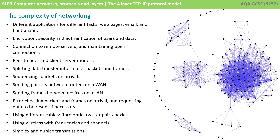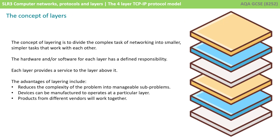We might be using different types of cable like fibre, twisted pair, and coaxial, or we might be using wireless with frequency and channels. We might be transmitting data in one direction or both directions simultaneously, which is known as duplex. The point is that transferring data between two points on a wide area network or a local area network is a very complex operation, and we need a way of simplifying it.